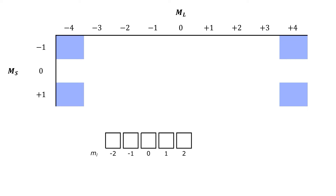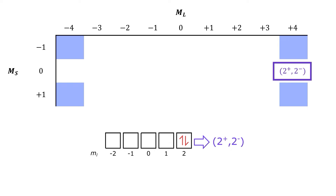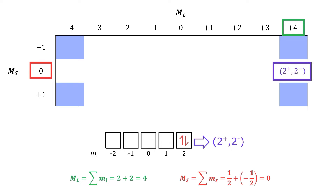Last time we created this table incorporating all 45 microstates associated with the d² free ion. If we have 5 d orbitals, we have ml values from -2 to +2. As an example, we can put two electrons in the ml = +2 orbital, one spin up and one spin down. In shorthand, we write this as 2⁺ and 2⁻ to indicate both electrons are in the ml = +2 orbital. The microstate goes in the box with coordinates ML = +4 and MS = 0. Capital ML is the sum of the individual ml values, and capital MS is the sum of the individual ms values.